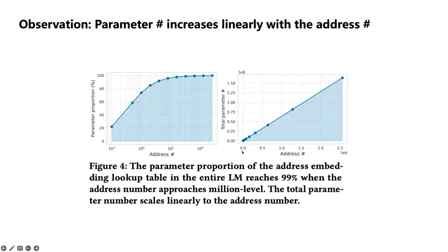We can observe that the number of parameters increases linearly with the number of addresses, and when the address number approaches tens of millions, the total number of parameters can reach billions.